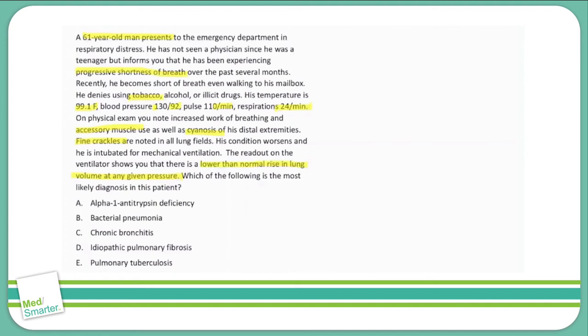Furthermore, idiopathic pulmonary fibrosis is a type of restrictive lung disease, which would cause a decrease in compliance, as opposed to things like alpha-1 antitrypsin deficiency and chronic bronchitis, which would cause an increase in compliance. So I'm going to think that D is probably the answer here.